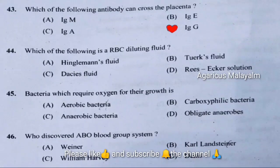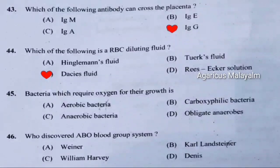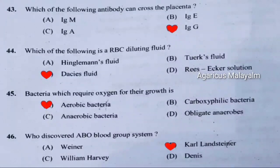Forty-fourth question: Which of the following is an RBC diluting fluid. Correct answer is option C — Dacie's fluid. Forty-fifth question: Bacteria which require oxygen for their growth is. Correct answer is option A — aerobic bacteria. Forty-sixth question: Who discovered the ABO blood group system. Correct answer is option B — Karl Landsteiner.